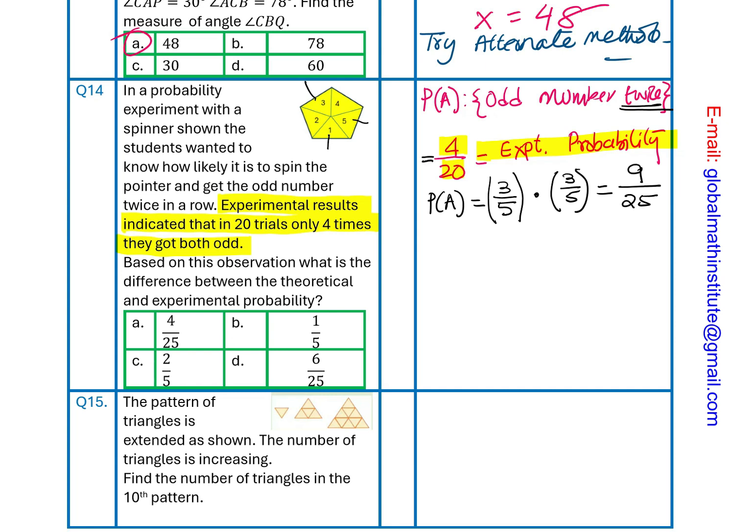Here, if I simplify, 4 out of 20 basically means 1 out of 5. It is good to simplify. So, theoretical probability is 9 out of 25. Experimental probability is 1 out of 5. Is that part clear to you?